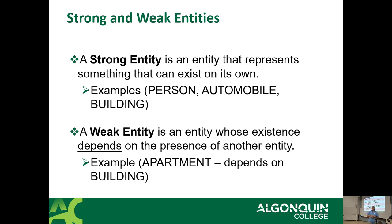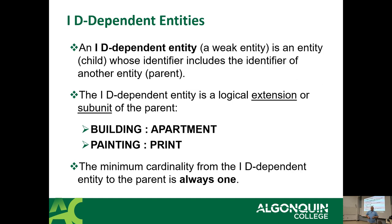Another easy example: you ordered something from Amazon, you have an order number, and each item in your order cannot exist if you haven't placed an order — that is a weak entity. Normally a weak entity, when it has identifiers and primary keys, will carry the parent's primary key as part of its own primary key, though depending on your database design that may or may not be applicable.